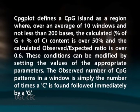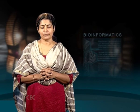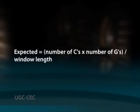The observed number of CpG patterns in a window is simply the number of times a C is found immediately followed by a G. The expected number of CpG patterns is calculated for each window as the number of CpG dinucleotides you would expect based on the frequency of C's and G's in that window. Thus the expected frequency of CpGs is calculated as the number of C's multiplied by the number of G's in the window, divided by the window length.